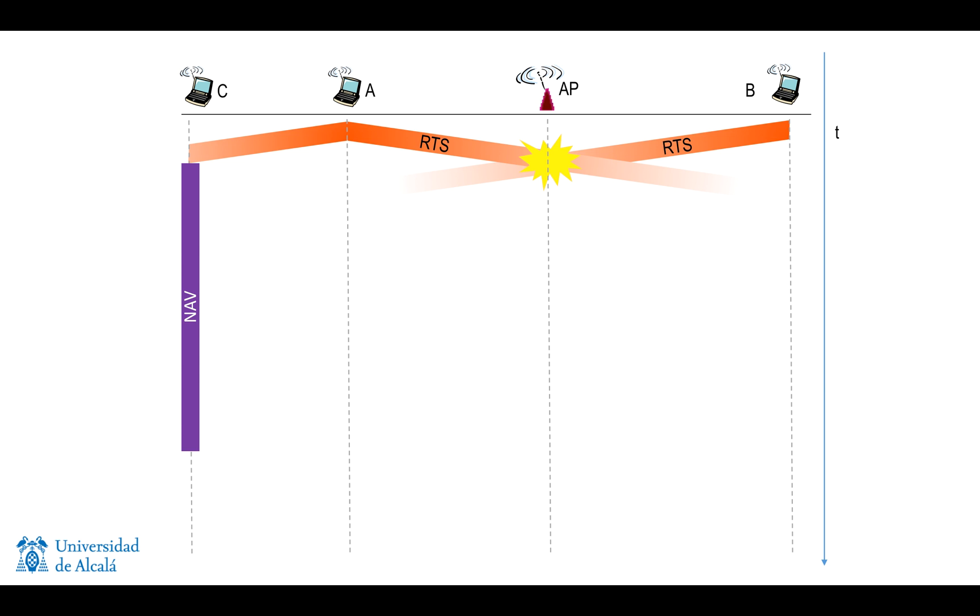C is not going to transmit anything during the estimated duration of A's transmission. This is represented in the figure by this purple line with the NAV acronym. NAV stands for network allocation vector, and it's basically a timeout that C sets so that it does not transmit anything until A terminates the transmission.